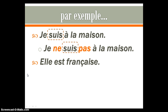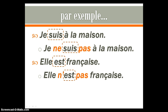Elle est française — she is French. Here's another example. We have to find our verb. Elle is my subject, and est is the verb. We're going to put ne and pas around it. And here, we had to make it an apostrophe because est started with a vowel — so it becomes Elle n'est pas française.